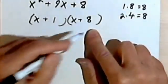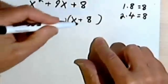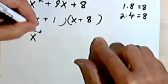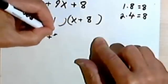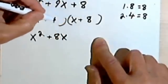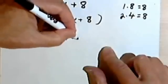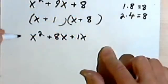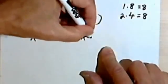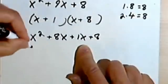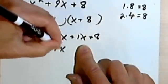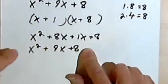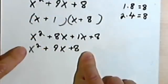Now we can go and check our answer if we want. So all we're going to do is FOIL it back to the original. x times x is x squared, x times 8 is 8x, 1 times x is 1x, so we have the coefficient, and 1 times 8 is 8. Combining these two, I get x squared plus 9x plus 8, which is where I began.